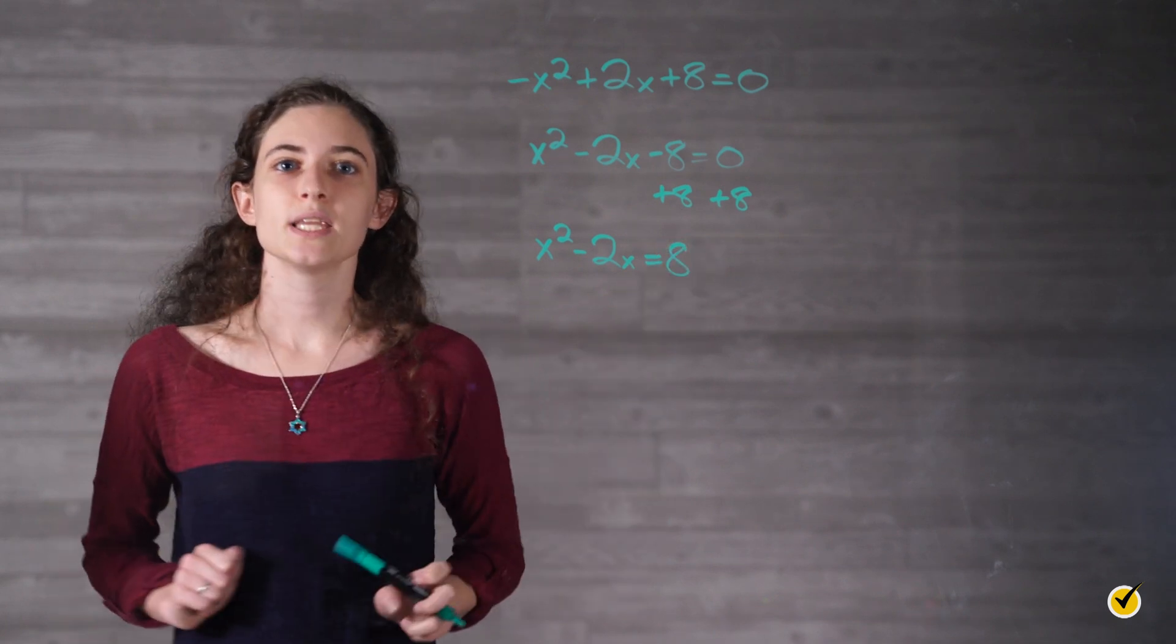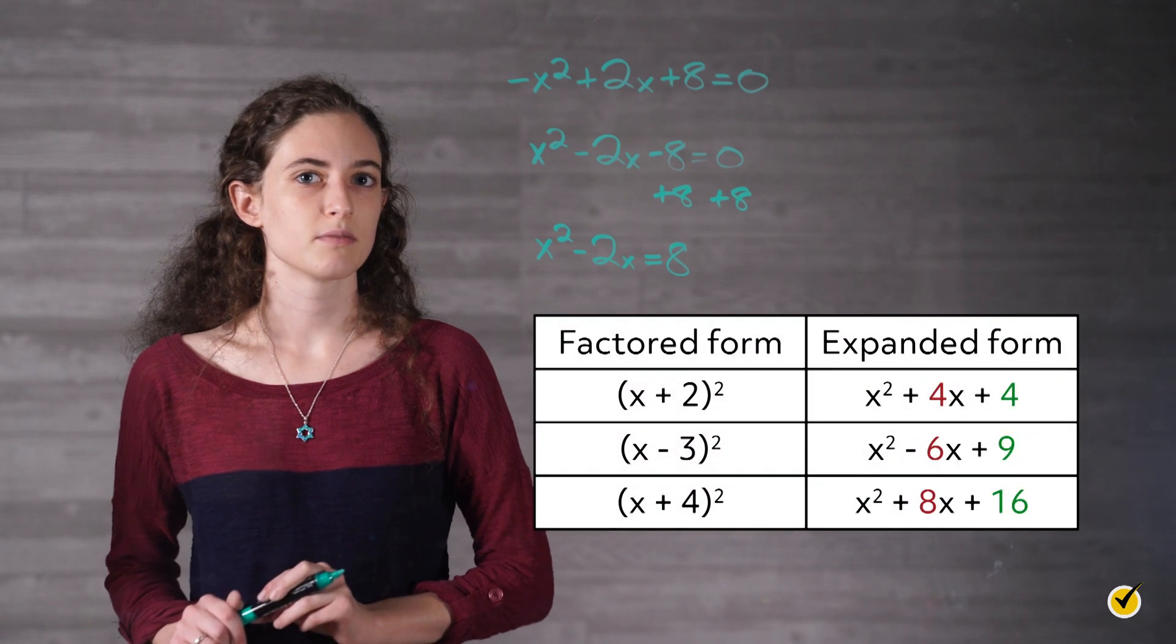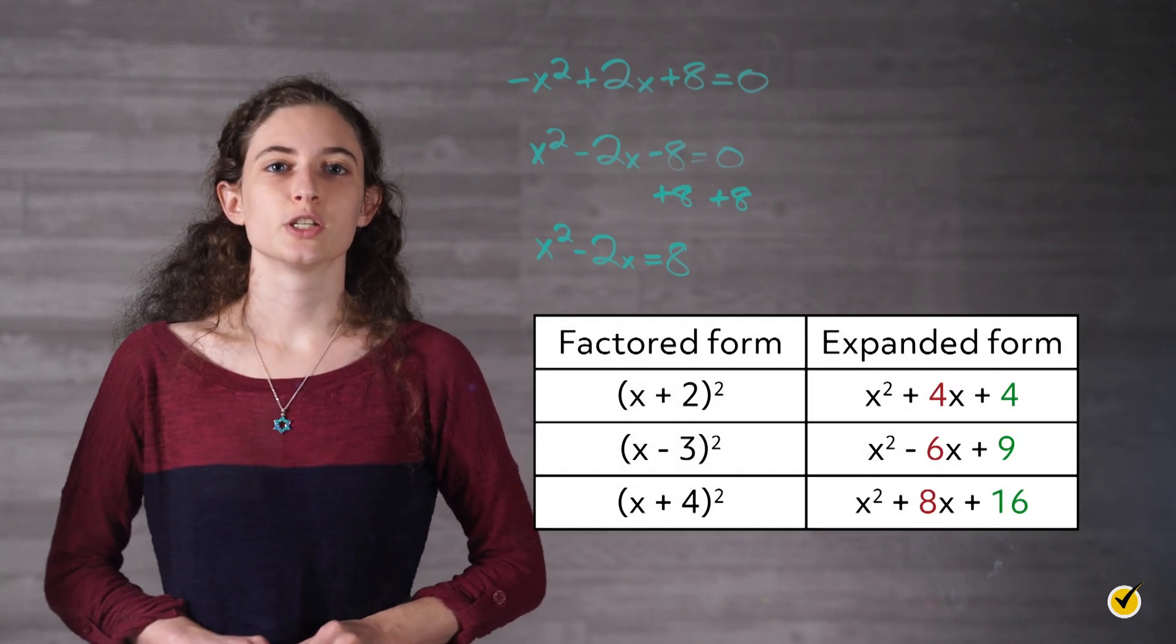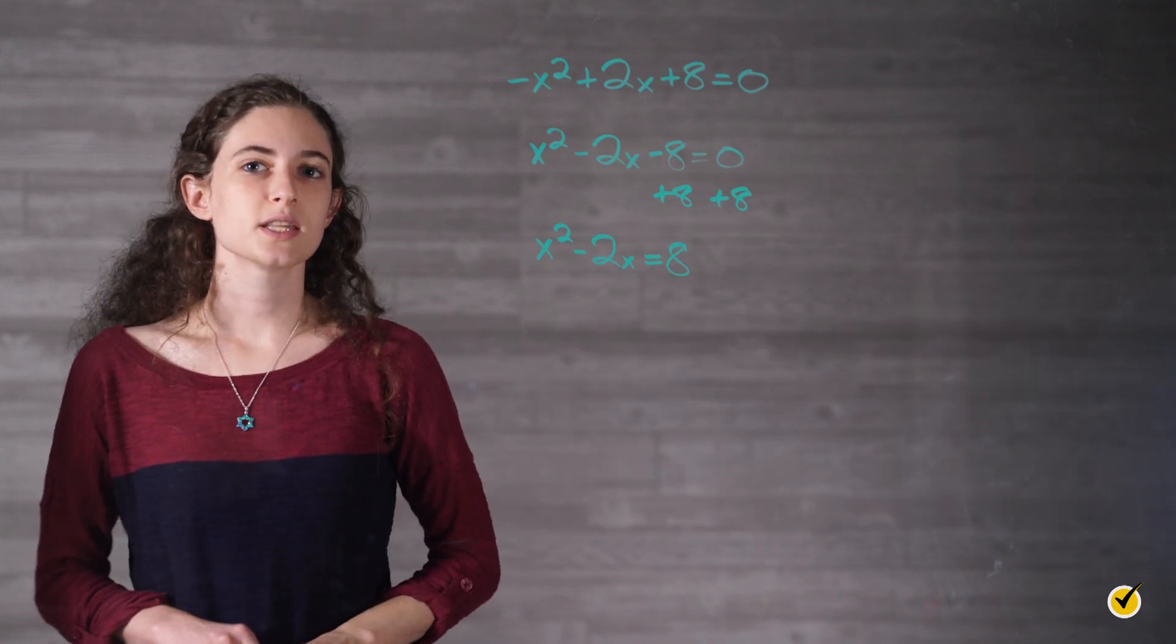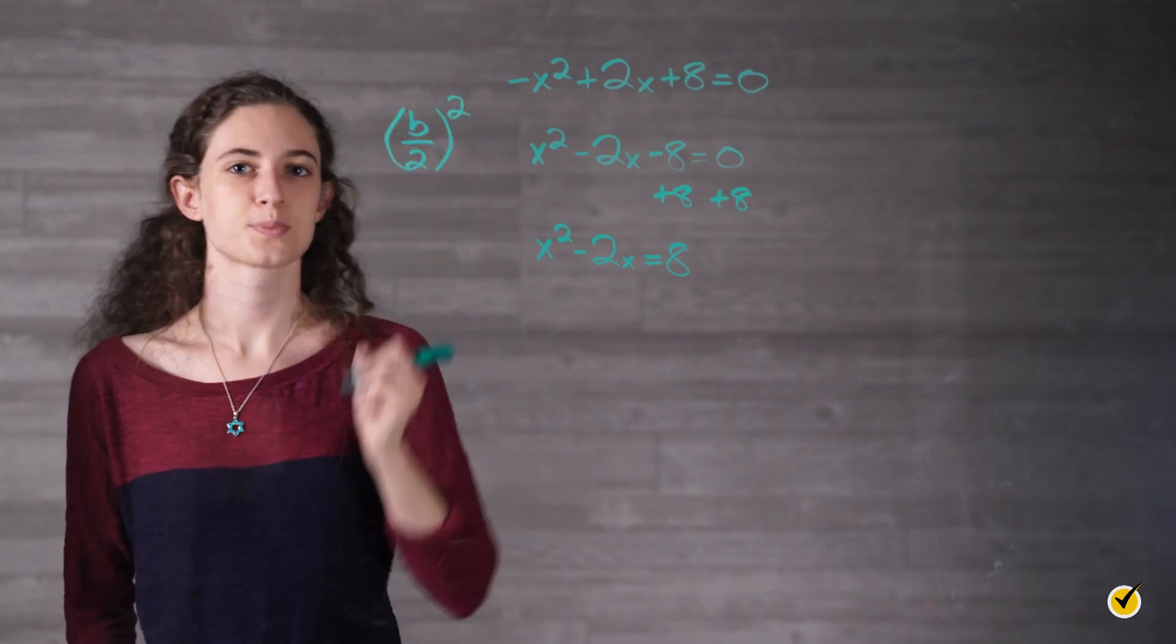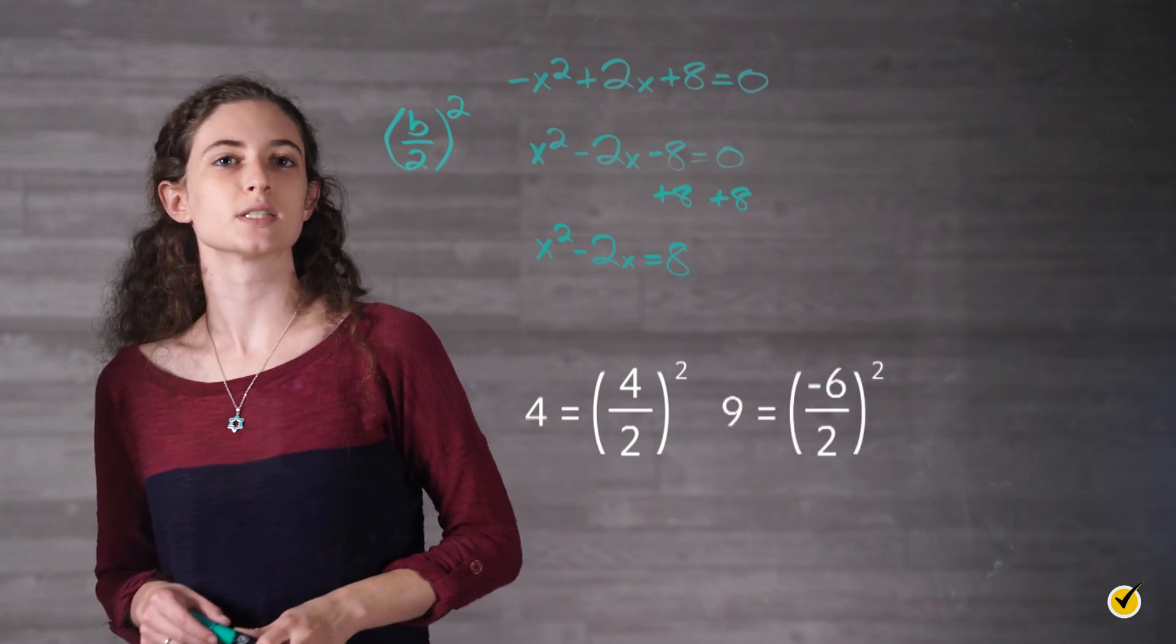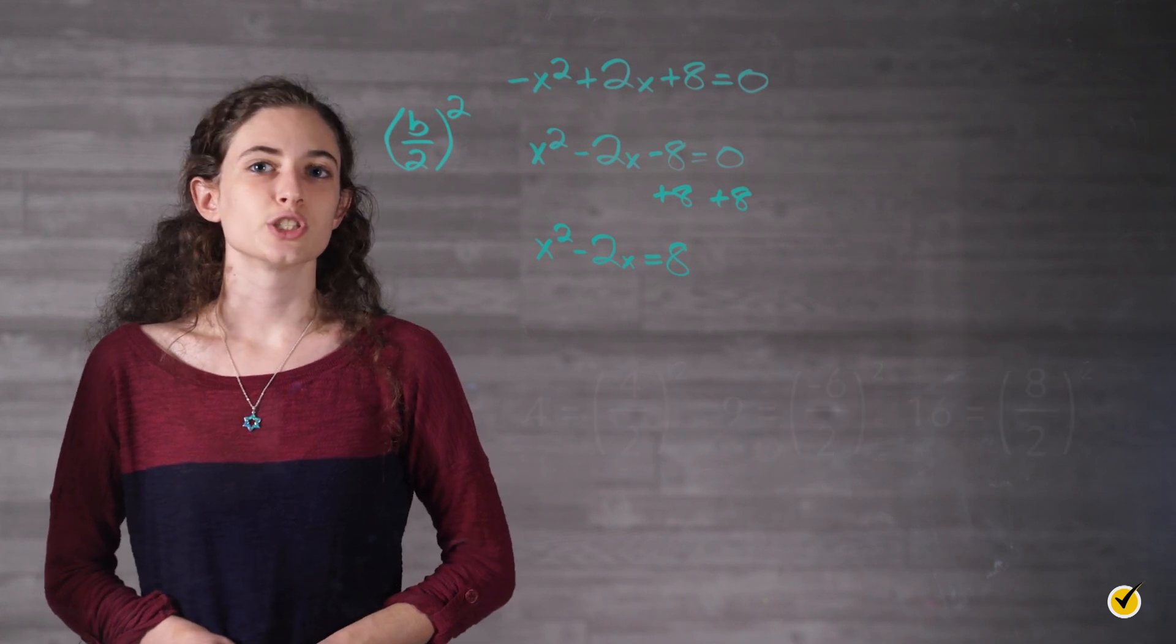Now we need to add a number that creates a perfect square on the left-hand side. Let's consider some perfect squares. To complete the square in our equation, we'll need to add a number to both sides of our equation. In the examples, notice that the number is (b over 2) squared. 4 equals (4 over 2) squared, 9 equals (negative 6 over 2) squared, and 16 equals (8 over 2) squared.